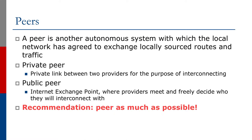Peers, on the other hand, are another autonomous system with which the local network has agreed to exchange locally sourced routes and traffic. These can be a private peer, which is a private link between two providers for the purpose of interconnecting, or they can be a public peer — for example at an internet exchange point where network operators meet and freely decide who they will interconnect with.